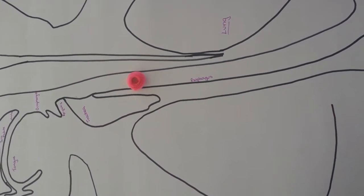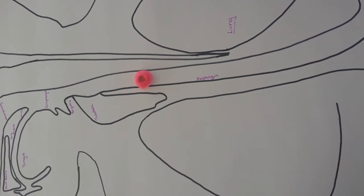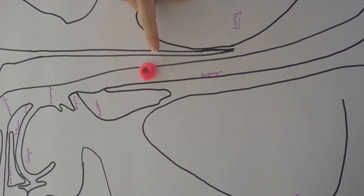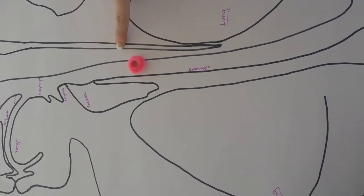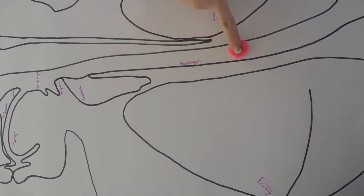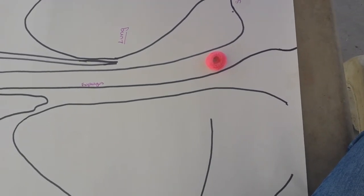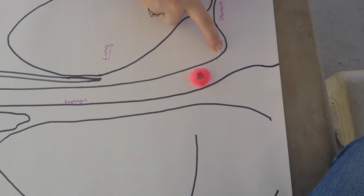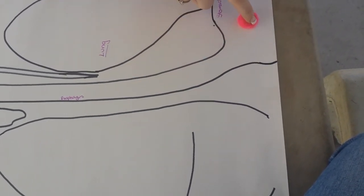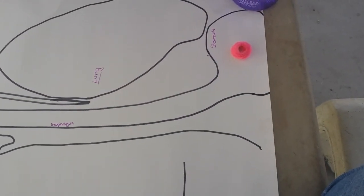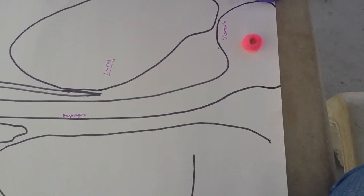The esophageal phase begins when the sphincter relaxes. Peristalsis, which is the contraction of smooth muscle in the esophagus, propels the bolus down the esophagus. Once the bolus reaches the bottom of the esophagus, the lower esophageal sphincter opens and the bolus enters the stomach. And that is the end of the process of deglutition.